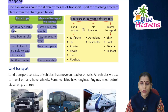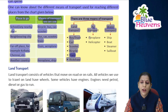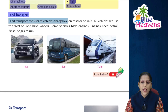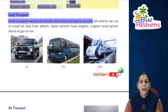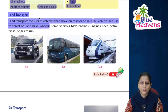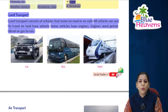There are three means of transport: land transport, air transport, and water transport. Land transport consists of vehicles that move on road or on rails. All vehicles we use to travel on land have wheels. Vehicles have engines, and engines need petrol, diesel, and gas to run.